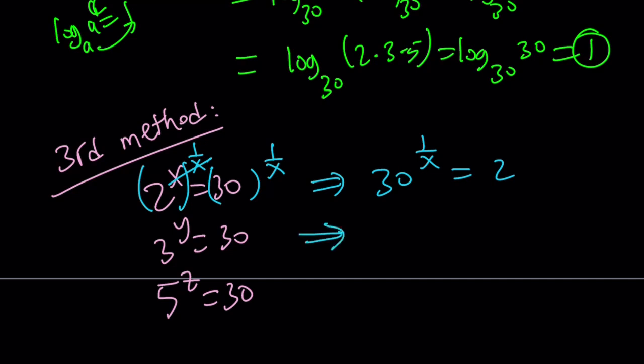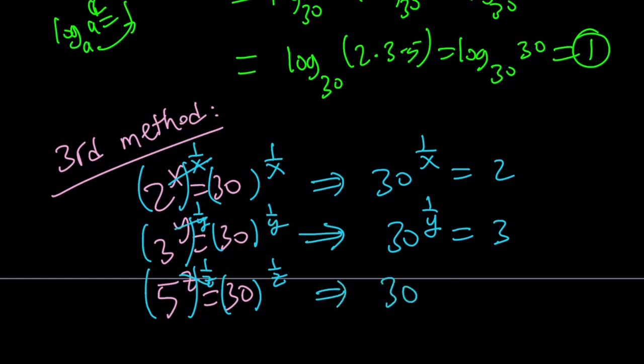And you can do the same thing here. 30 to the power 1 over y equals 3. If you just raise both sides to the power 1 over y, just like before, you get that. If you raise both sides to the power 1 over z, then z cancels out, and you get something very similar. 30 to the power 1 over z equals 5.